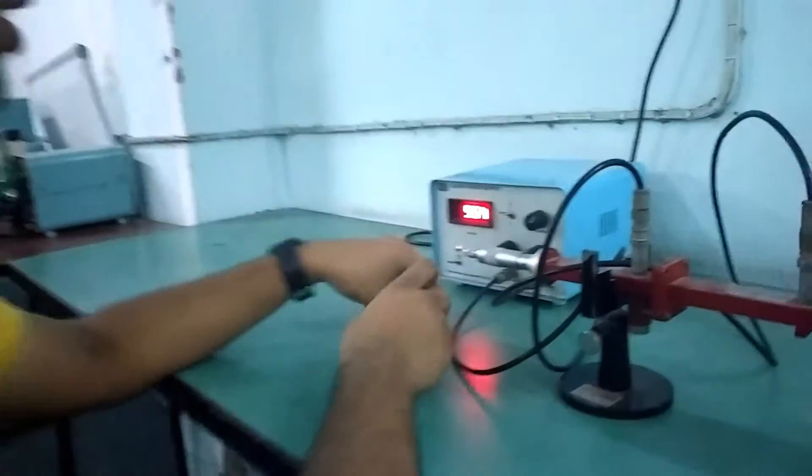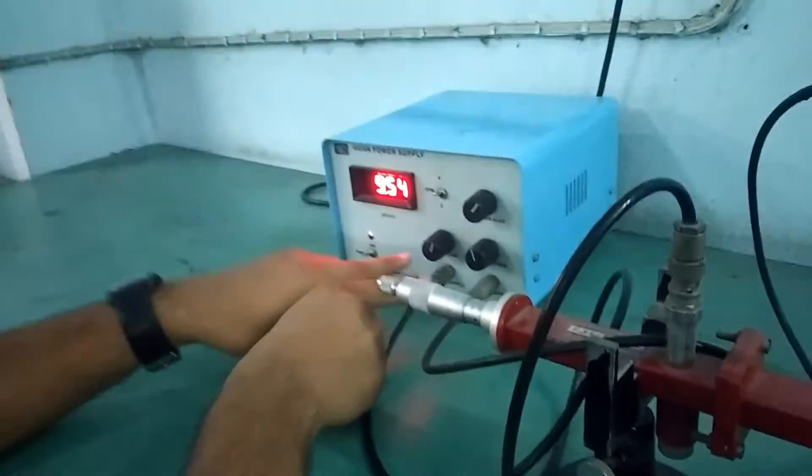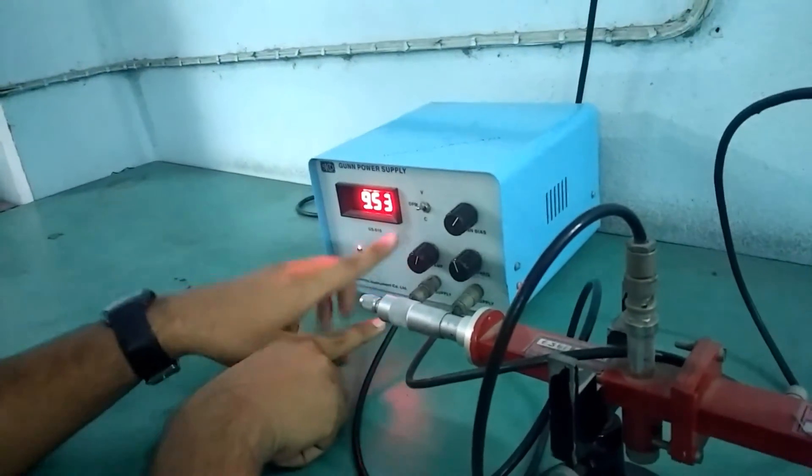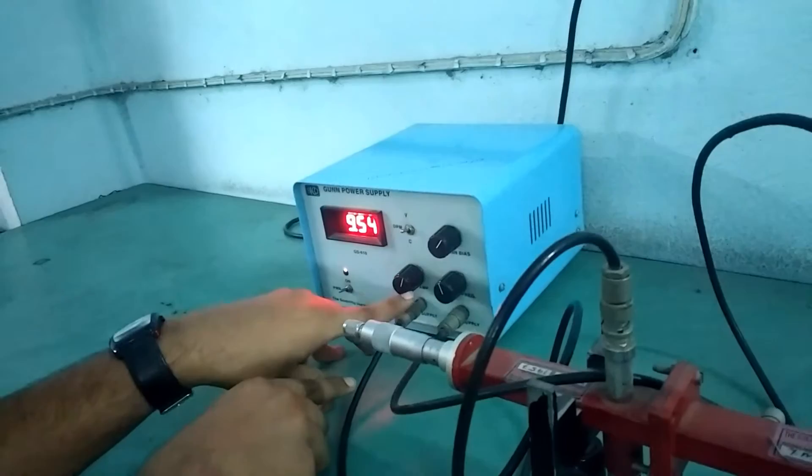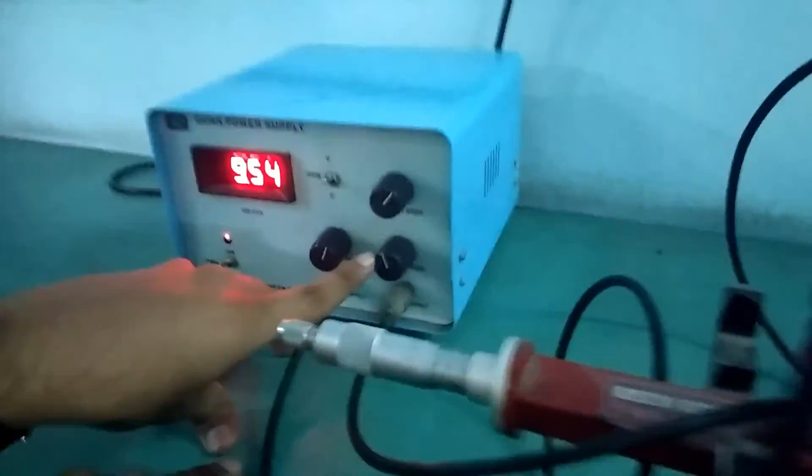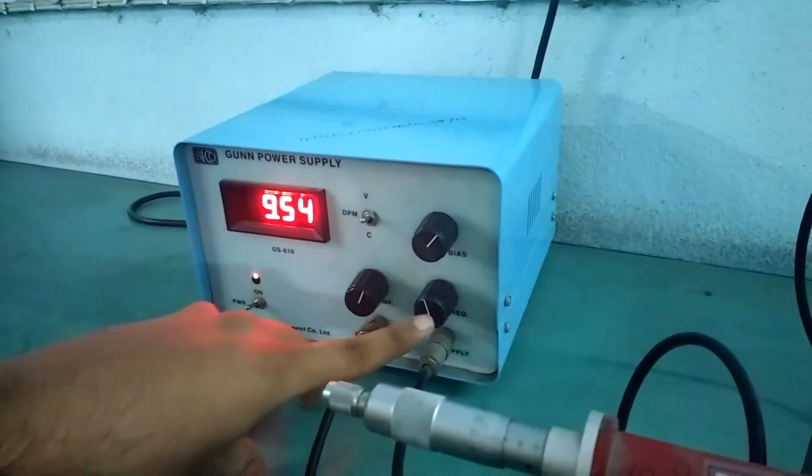So, this is the last part of this experiment. And in this, we have to apply a modulating signal. We can fix it to any arbitrary value. Along with it, we have to change the modulating frequency. And ensure that the needle of the VSWR meter does not go out of range.